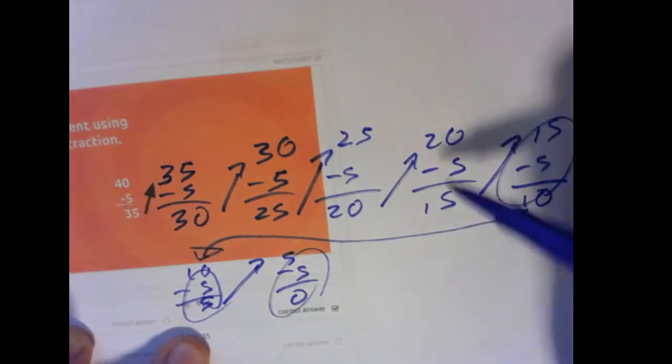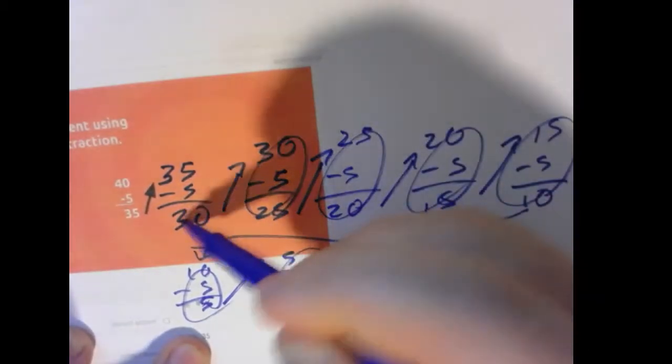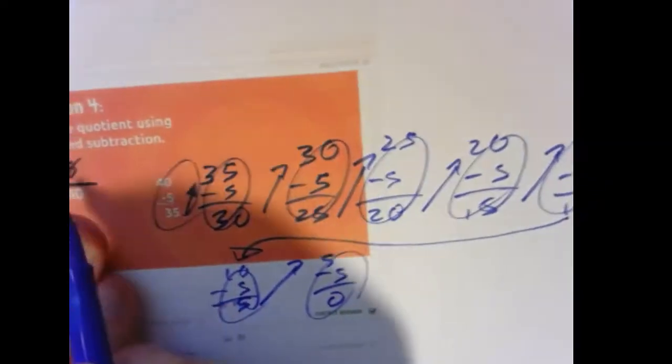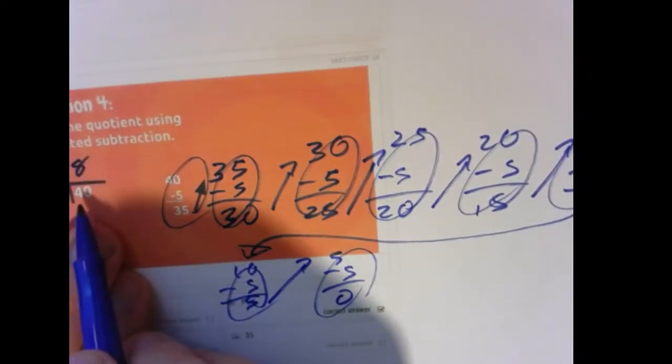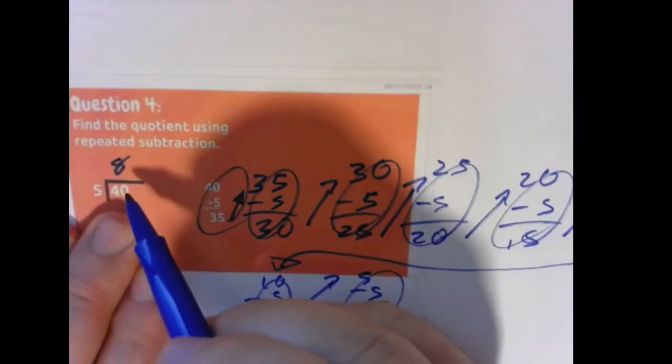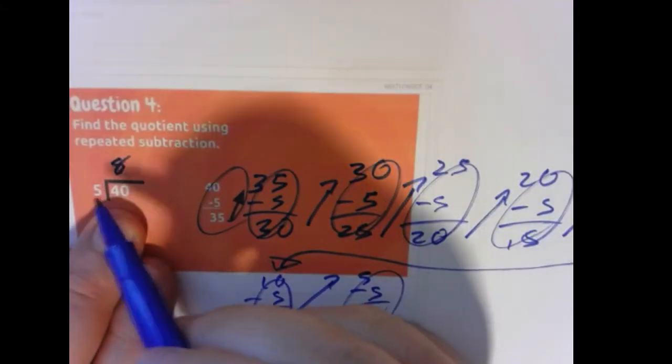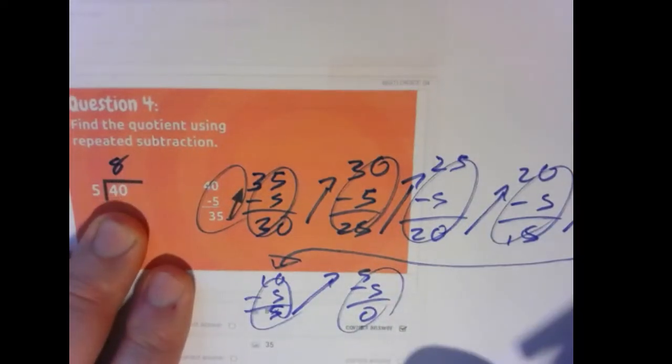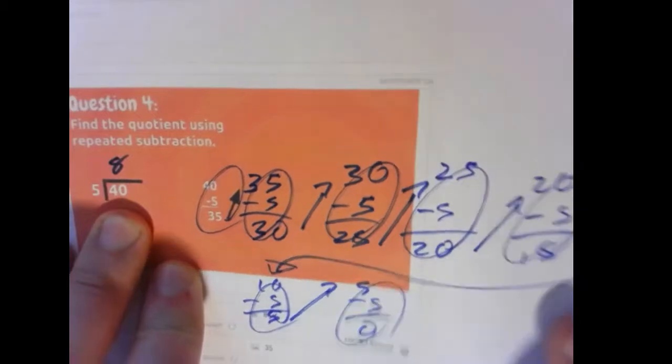So how many cycles was that? 1, 2, 3, 4, 5, 6, 7, 8. Does that make sense? Yeah, it does. 8 times 5 is 40. 40 divided by 5 is 8. 5 subtracted 8 times from 40 gets rid of all of the numbers, down to 0.